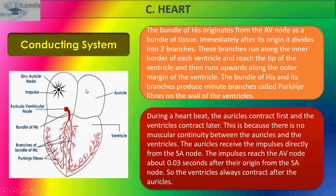The bundle of His originates from the AV node as a bundle of tissue. Immediately after its origin, it divides into two branches. These two branches run along the inner border of each ventricle. The bundle branches give rise to Purkinje fibers on the wall of the ventricles.